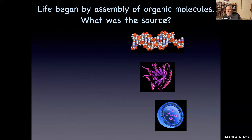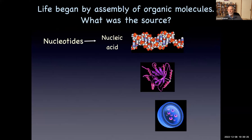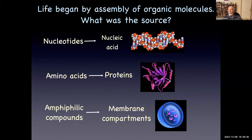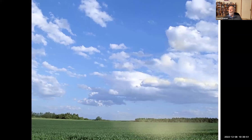Life began by assembling organic molecules. There had to be nucleotides polymerized into nucleic acids, amino acids polymerized into proteins via peptide bonds, and amphiphilic molecules like soap that would form membranes — because you must have cellular membranes if you're going to have an origin of cellular life. The question is where those organic molecules came from.